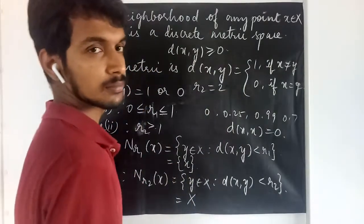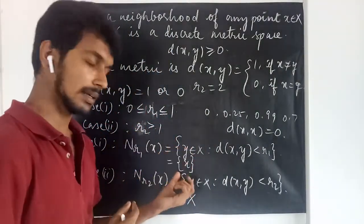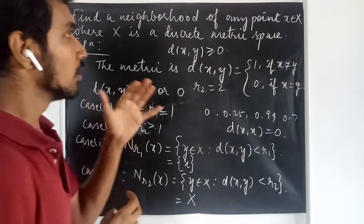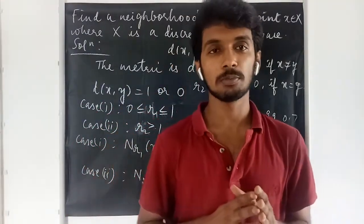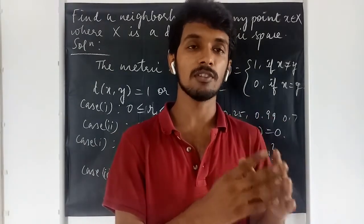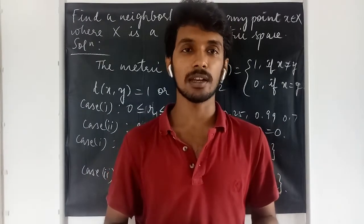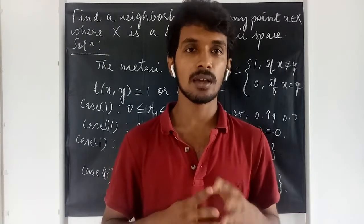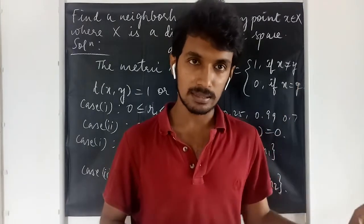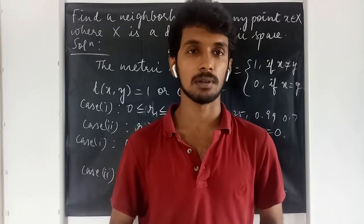In a discrete metric space, the neighborhood is either a singleton set {x} or the entire set x, depending on the radius. We don't need to know the specific set - if we know a discrete metric is defined on it, we simply check whether the radius is less than 1 or greater than or equal to 1. Thank you for watching. You can post any queries in the comment box.